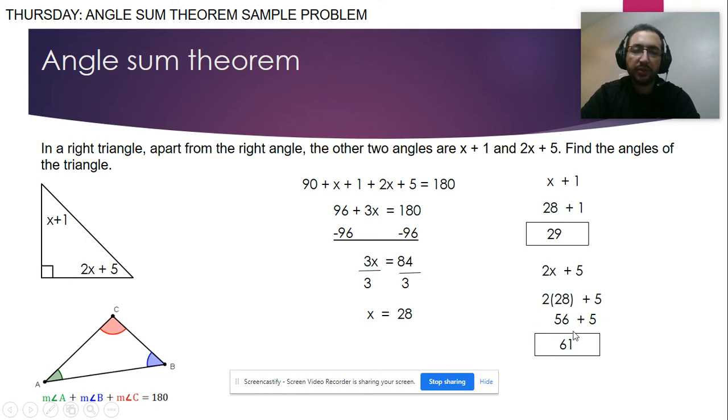And we know it is correct because 61 plus 28 is 90, 90 plus 90 will be 180, which makes the statement true. So all the angles when we solve them inside the triangle should be equal to 180.